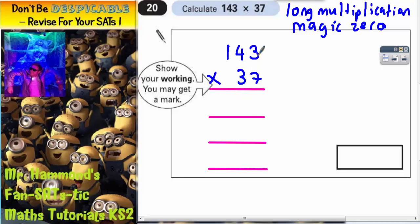So 7 times 3 is 21. Put your 1 in, carry your 2. 7 times 4 is 28 plus that 2 is 30. Put your 0 in, carry your 3. And 7 times 1 is 7 plus that 3 is 10. Put your 0 in, could carry 1 down here but we've run out of columns here so that 1 needs to go straight in. So 7 lots of 143 is 1001.